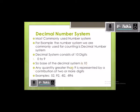Any quantity greater than 9 is represented by a combination of 2 or more digits. For example, if you need to write 92, you take 9 and 2 from the digits 0 to 9. Examples include negative numbers like 82, minus 82, minus 896, 52, 92 — all numbers we use are part of the decimal number system.